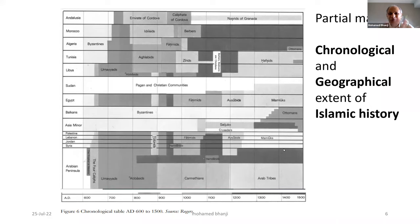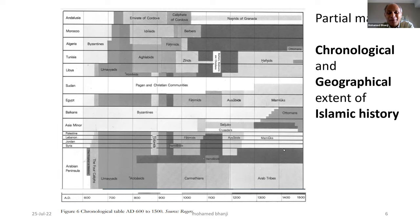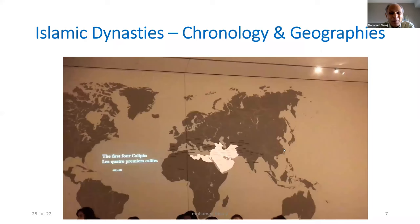This slide shows the chronological and geographical extent of Islamic history, right from the inception of Islam when revelation was granted to Prophet Muhammad in the year 610. The revelation continued for 23 years thereafter. As a result of the faith of Islam itself — the message of faith and ethics — Islam spread rapidly after the death of the Prophet.